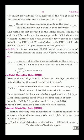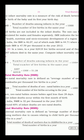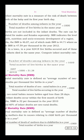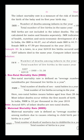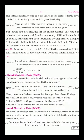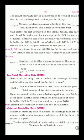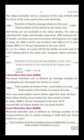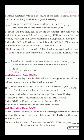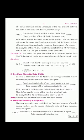Let us take a simple example to apply the formula of infant mortality rate. In a town, in a year, 62,418 live births occurred and of these, 3,207 infants died in the same year. Compute infant mortality rate. Given: live births = 62,418 and infant deaths = 3,207. IMR = 3,207 divided by 62,418 into 1,000, which gives a value of 51.38. These examples are exclusively for two marks and are simple to calculate.